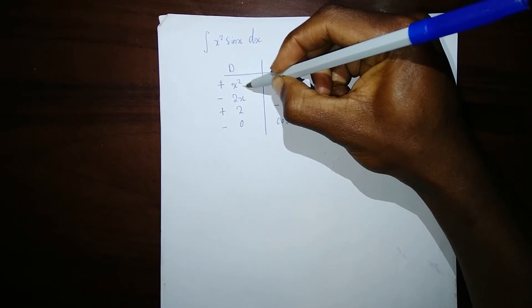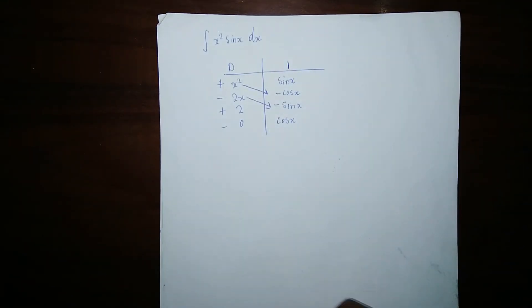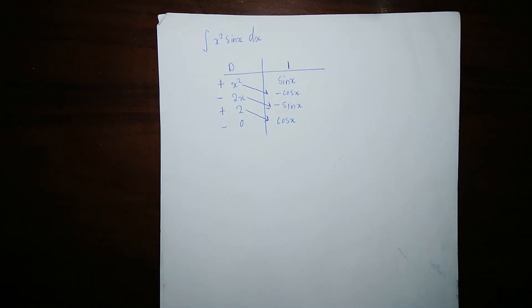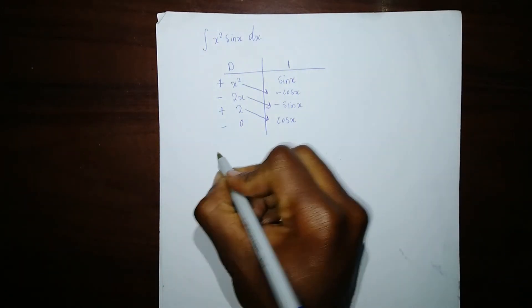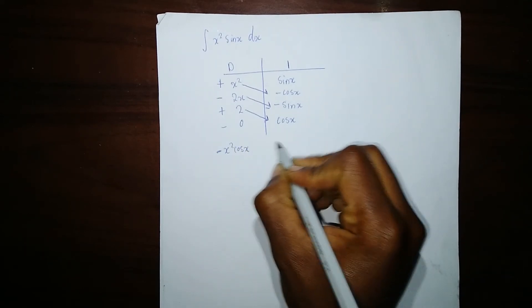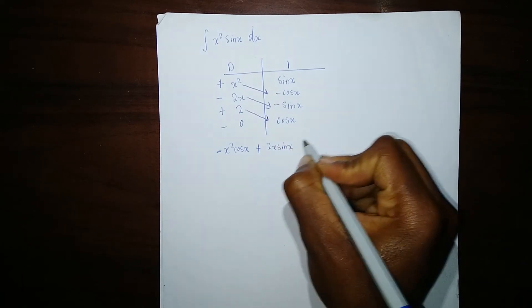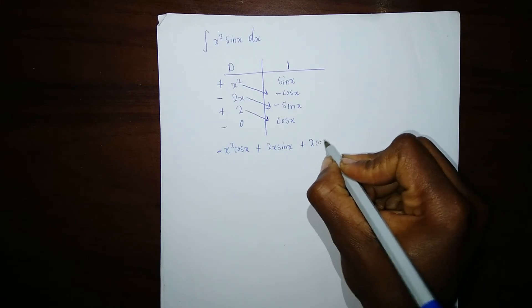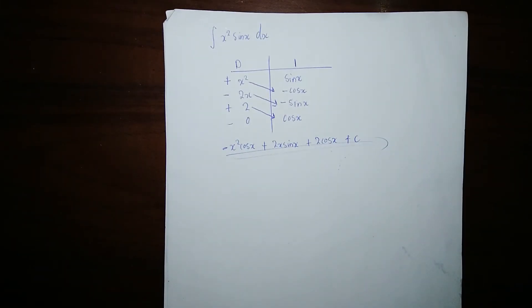x² with negative cos(x), 2x with negative sin(x), 2 with cos(x). Then you multiply: you get negative x² cos(x) plus 2x sin(x) plus 2 cos(x) plus C. You're done. As you can see, this is very simple and very easy.